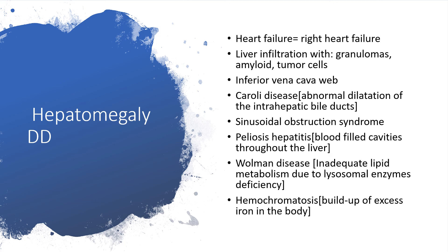Other oncological causes include leukemia or secondary metastasis. In cardiology, hepatomegaly could be secondary to heart failure — particularly right heart failure — and liver infiltration with granulomas, amyloid, or tumor cells. Caroli disease is an abnormal dilatation of the intrahepatic bile ducts. For those who've listened to my biliary system presentation, you understand how the right and left hepatic ducts form the common hepatic duct, joined by the cystic duct to form the common bile duct on the way to the ampulla of Vater of the duodenum, where the sphincter of Oddi controls influx into the duodenum, and the pancreatic duct joins at that stage.